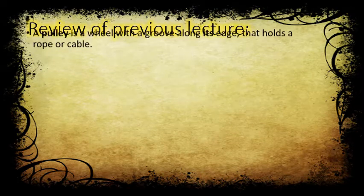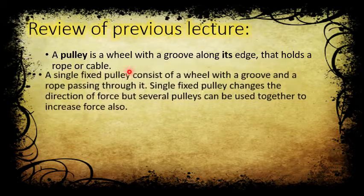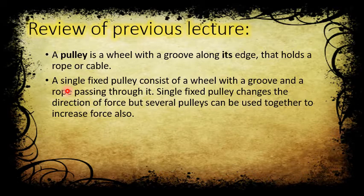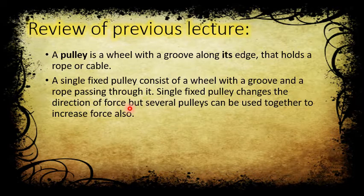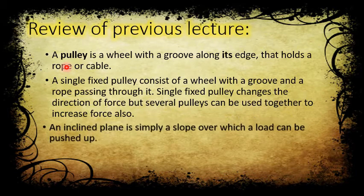Before we start wheel and axle, let's review the previous lecture. We learned that a pulley is a wheel with a groove along its edge that holds a rope or cable. A single fixed pulley consists of a wheel with a groove and a rope passing through it, and it changes the direction of the force. If several pulleys are attached and work together, the force can be increased.